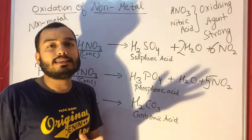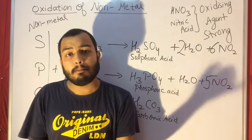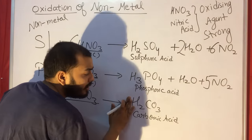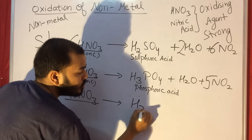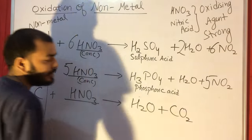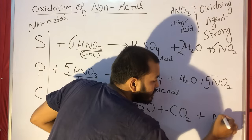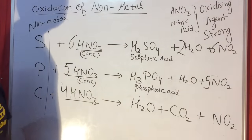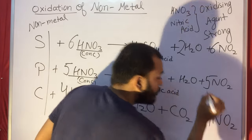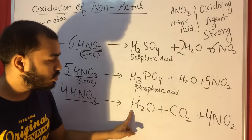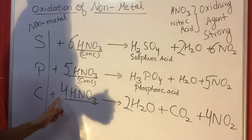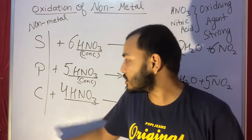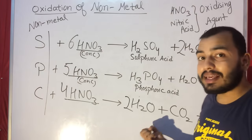For carbon: C + HNO3 → H2CO3 + H2O + NO2. But carbonic acid is very weak, so it decomposes into H2O and CO2. So the final products are CO2 and H2O, not carbonic acid. For balancing this equation, put 4 in front of HNO3 and 4 in front of NO2, and 2 in front of H2O. In the last reaction, acid is not actually formed because carbonic acid is weak and decomposes.